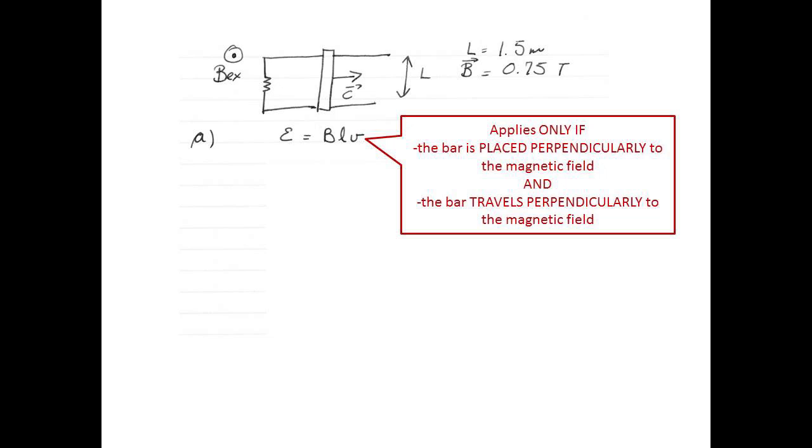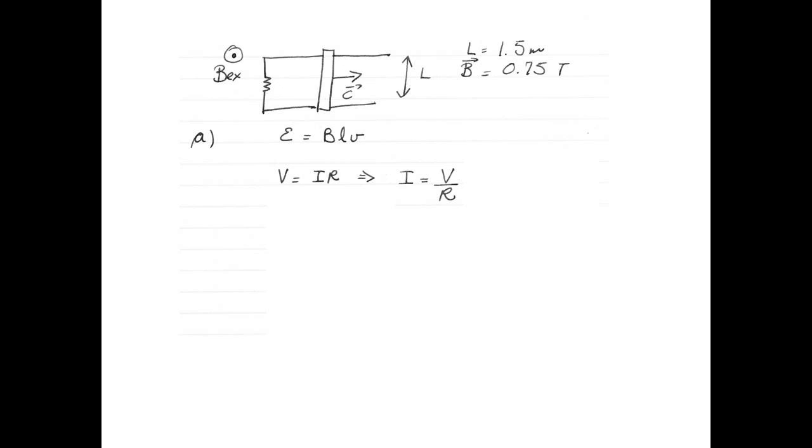For a bar that is placed perpendicular to a magnetic field and that travels perpendicularly to the magnetic field, the induced EMF is given by the motional EMF formula E equals BLV. To find the current, we will need to use Ohm's law V equals IR and rewrite it as I equals V over R.